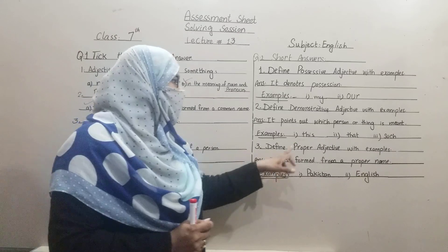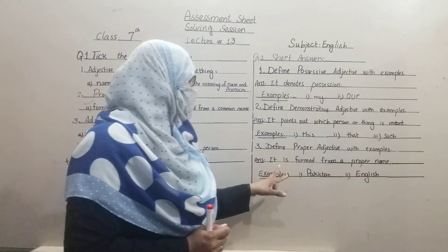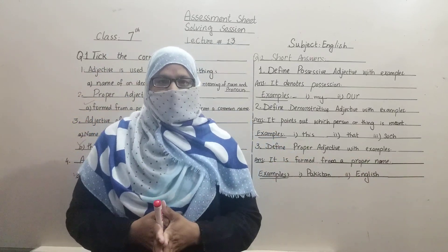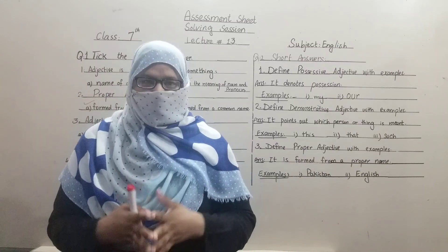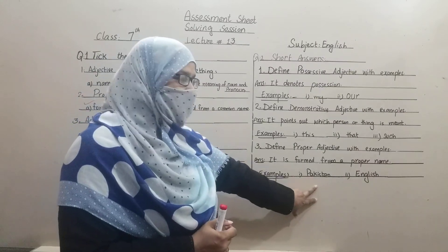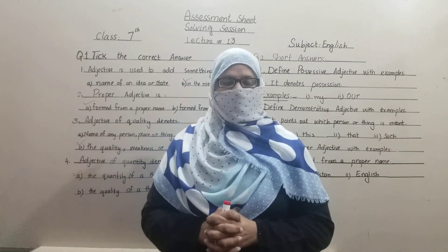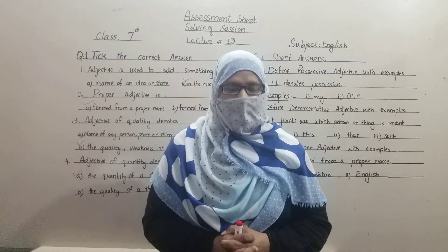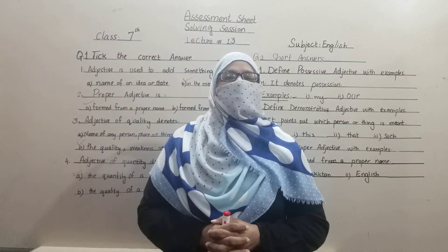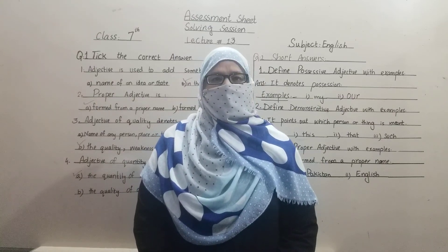Question number 3 — define proper adjective with example. We have to define proper adjective. It is formed from a proper noun — proper adjective is formed and derived from a proper noun. Its example: Pakistan — English. I hope today's solving session sheet was understandable. You have to solve it on your own sheet, learn it, and inshallah it will be beneficial for you. We will meet again — fi amanillah.